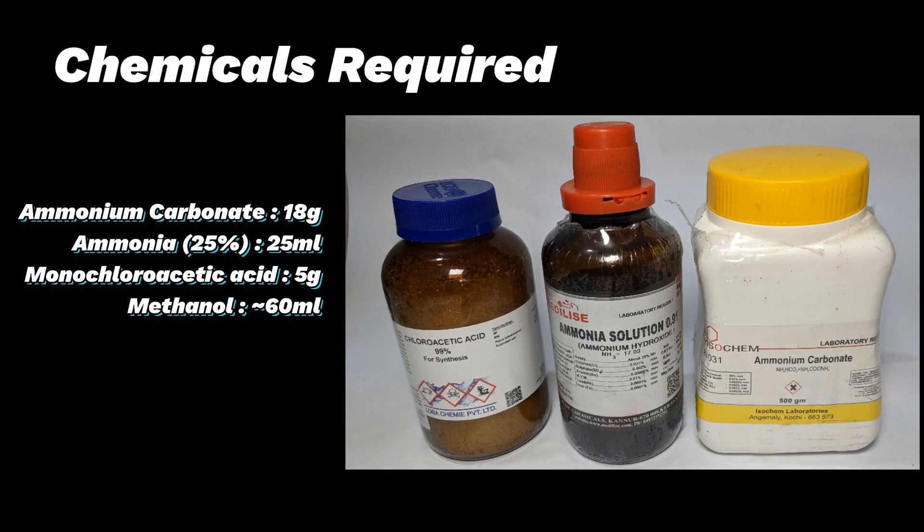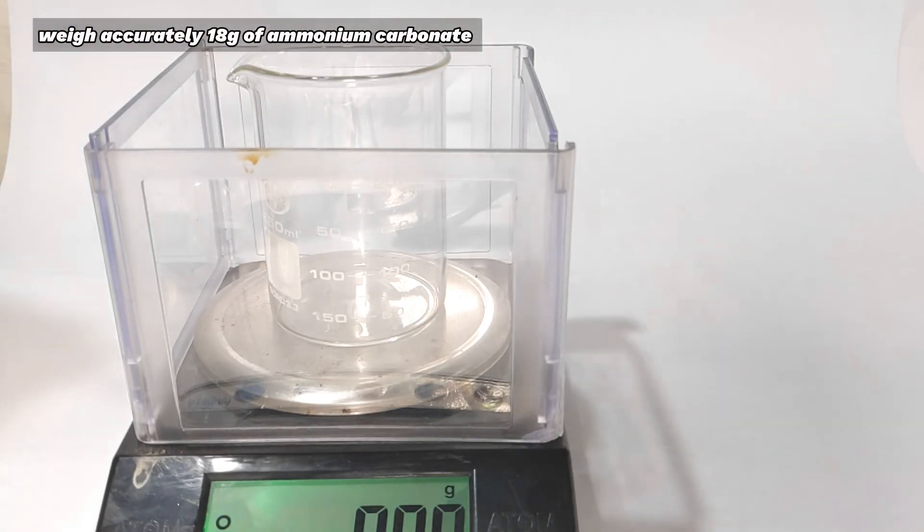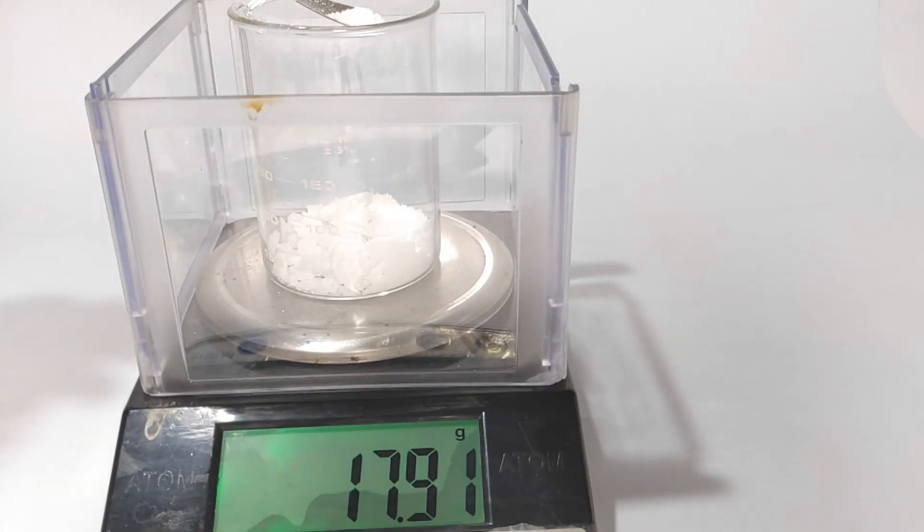Chemicals required for this experiment are 18 grams of ammonium carbonate, 25 milliliters of concentrated 25 percent ammonia solution, 5 grams of monochloroacetic acid, and approximately 60 milliliters of methanol. Start by weighing 18 grams of ammonium carbonate. It's a white powder with a strong smell of ammonia. Here I am using lab grade purity compound.